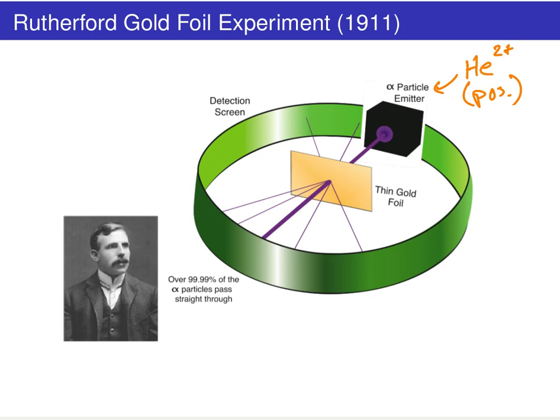So we have positive charges coming out. Rutherford then took a piece of gold foil and hammered it down to make it extremely thin — an extremely thin piece of gold foil.